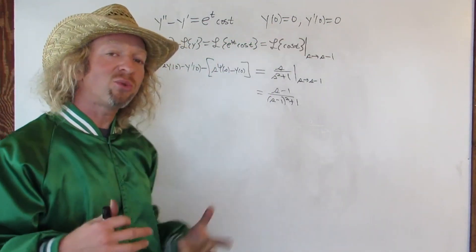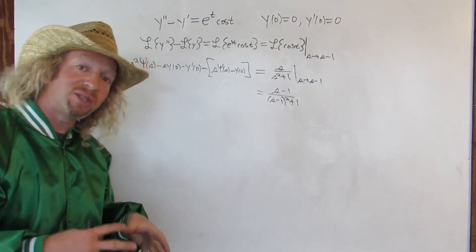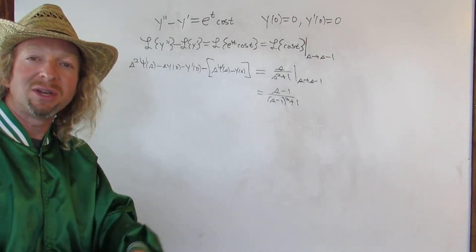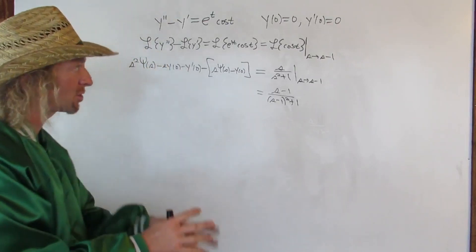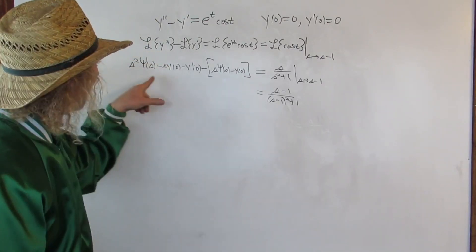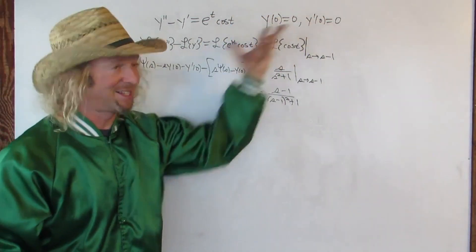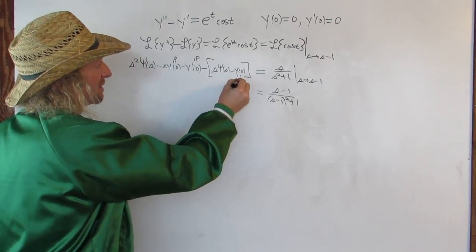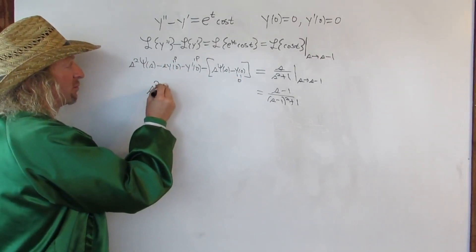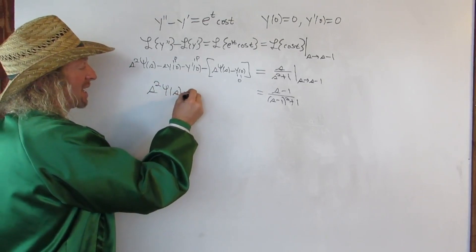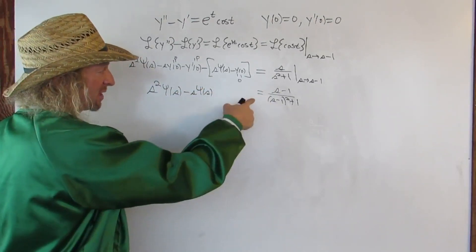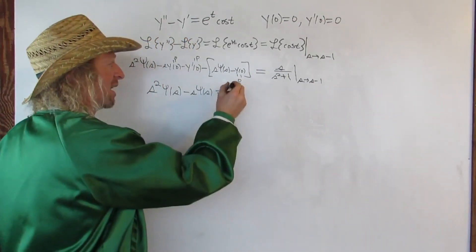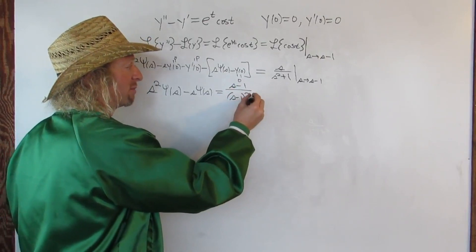Now we use our initial conditions. That's the cool thing about Laplace transforms — you get to use the initial conditions early in the problem, whereas normally in other methods you use them at the very end to find your constants. But with Laplace transforms you find them right away. They're all zero, which is fantastic. So this is going to be zero, this is going to be zero, and this is going to be zero. This gives us s squared·Y(s) minus s·Y(s), and then all this stuff over here: (s minus 1) over (s minus 1) squared plus 1.